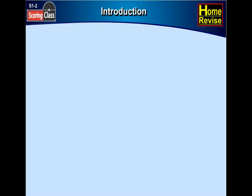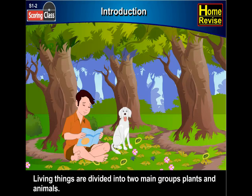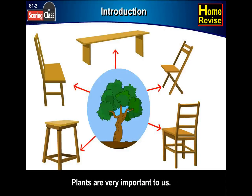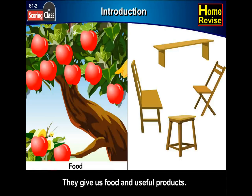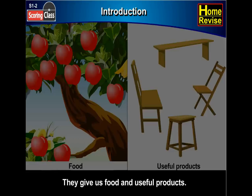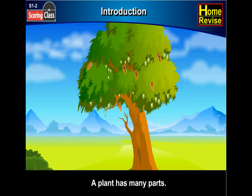Introduction. Living things are divided into two main groups: plants and animals. Plants are very important to us — we cannot live without them. They give us food and useful products. A plant has many parts.